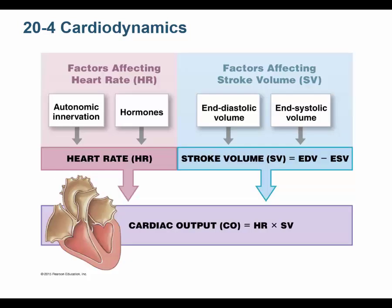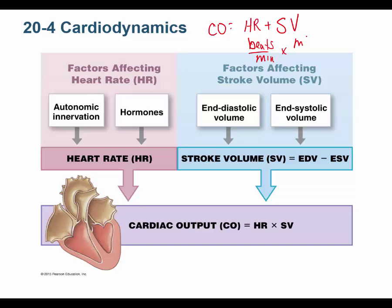Now, these are the overall factors that affect cardiac output. The formula is: cardiac output equals heart rate times stroke volume. Heart rate is beats per minute, stroke volume is milliliters per beat. When you multiply those, beats cancel out and you're left with milliliters per minute — that's your cardiac output.